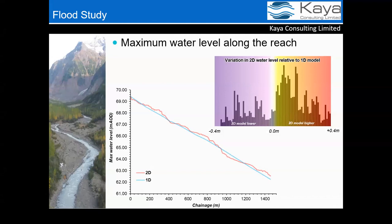Looking at the maximum water level along the reach in the channel: the long profile shows in-channel maximum water levels are higher in the 2D model, suggesting less conveyance capacity in the channel compared to the 1D part of the 1D-2D model. Smaller oscillations in the 2D water level likely result from inconsistencies in the bathymetry grid — likely due to less time spent refining it compared to the first case study. The histogram shows the largest variation in peak water level was plus or minus 0.4 meters, and given depths range between four and five meters, this variance is not a gross misrepresentation.